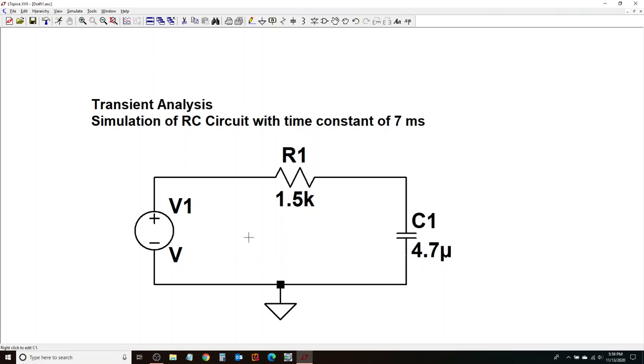Now I've chosen R1 and C1, but for the voltage source, I don't have any properties that I've assigned. So what I'm going to do is I'm going to choose a square wave for V1. So for that, I would need to right-click.